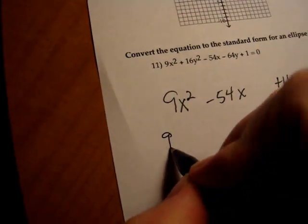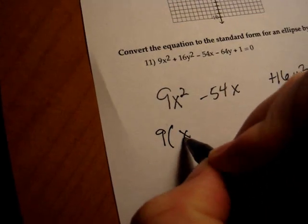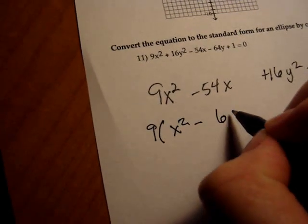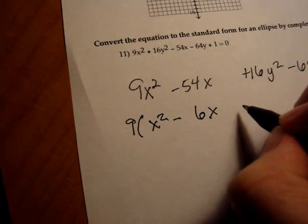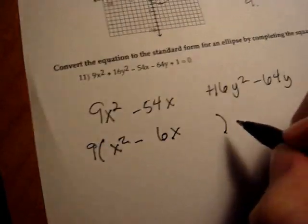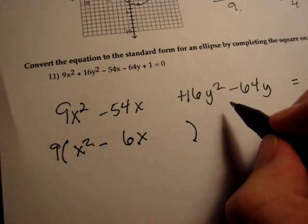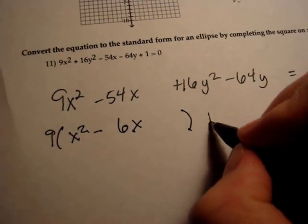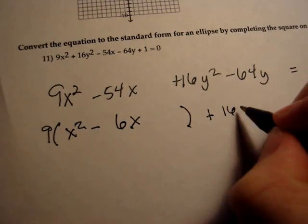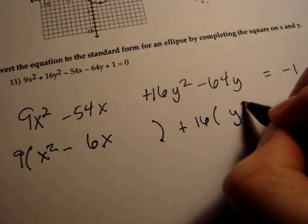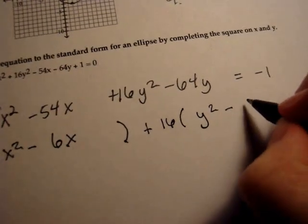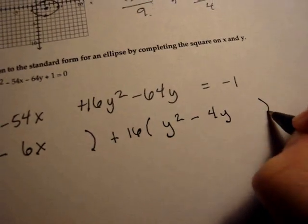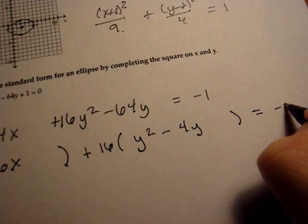Okay, so what we're going to get here is we're going to get nine, and we're going to be left with x squared minus that will be six x. I'm going to leave a blank spot there. Now I'm going to do the same thing with the y. I've got a 16 in front of my y squared, so I'm going to have plus. I'm going to factor the 16 out. I'll be left with y squared minus, it turns out that's going to be four y. And again, I'm going to leave some blank space, and it still equals negative one.